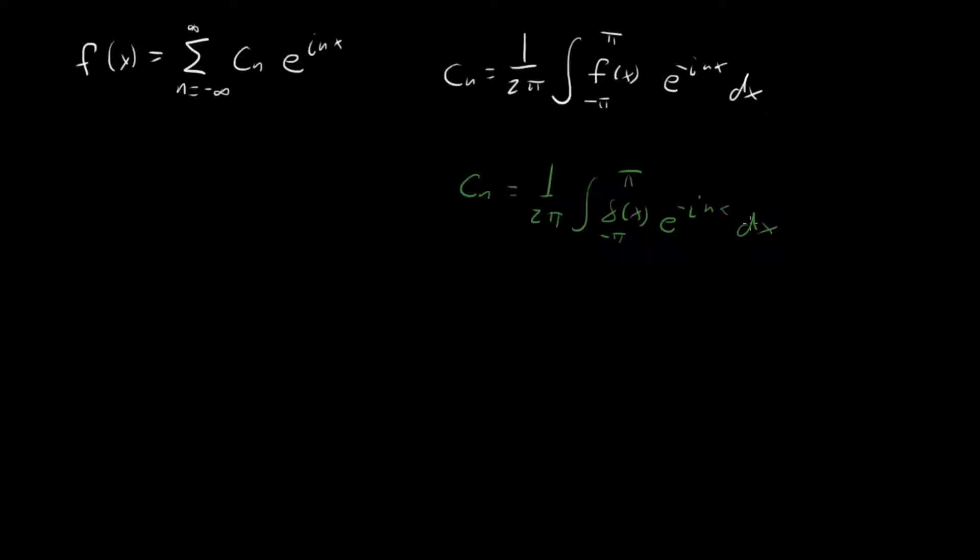Okay, well we're integrating over that peak, so that's good. So that means that we're going to be picking out this point where x is equal to 0, so we're going to have e to the 0, which is 1. So our coefficient is going to be 1 over 2 pi.